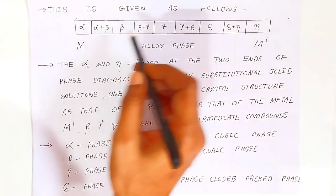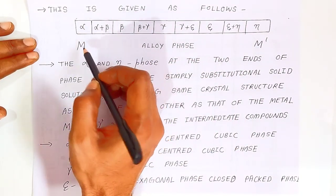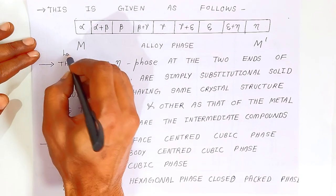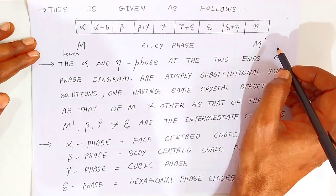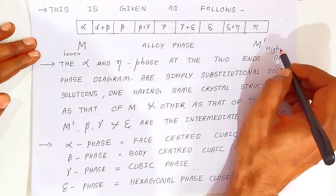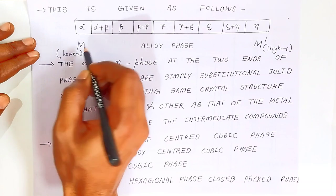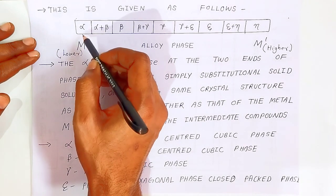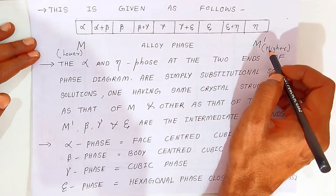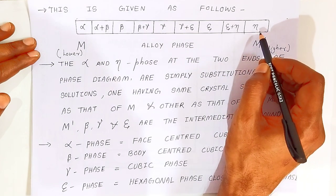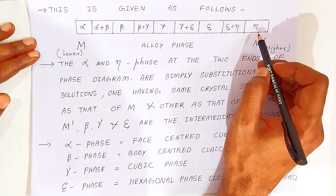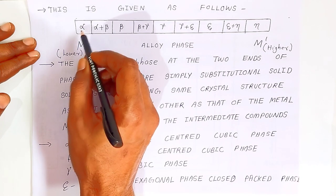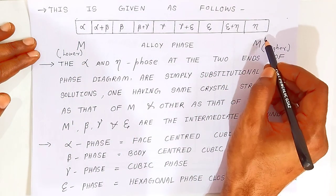So here we are mixing and forming the alloys, and there is a formation of intermediate phases. This is given as following. I have shown a block diagram. Capital M is the lower valency metal and M' is the higher valency metal. Lower valency metal is alpha phase and higher valency metal M' is the eta phase.